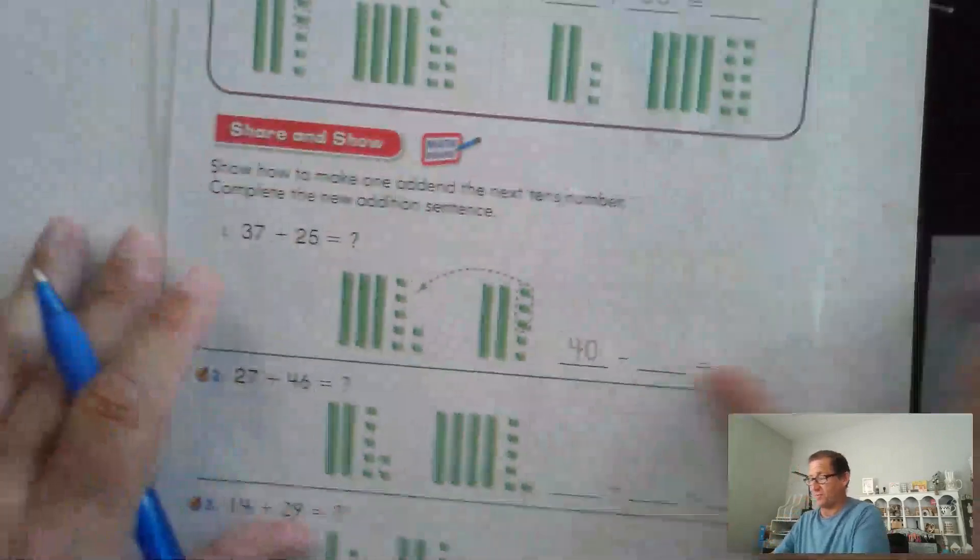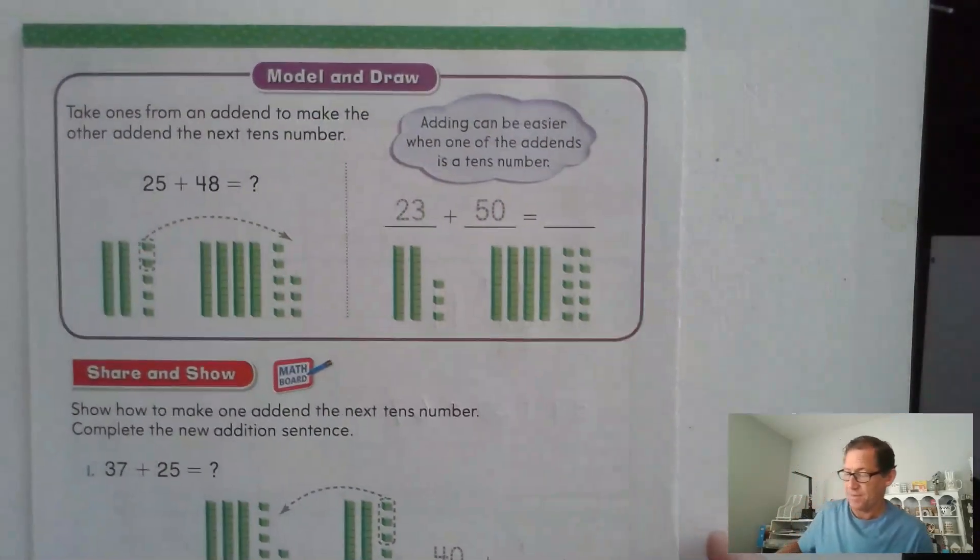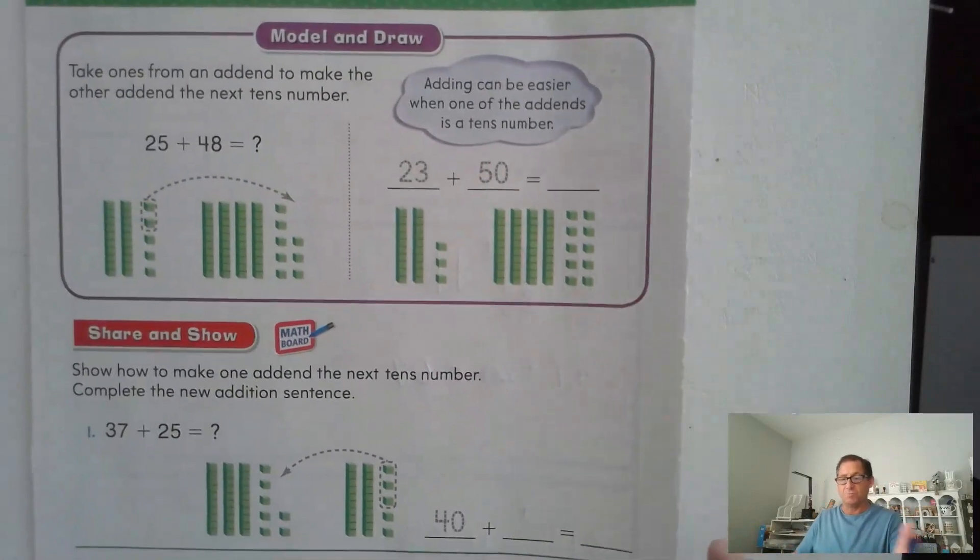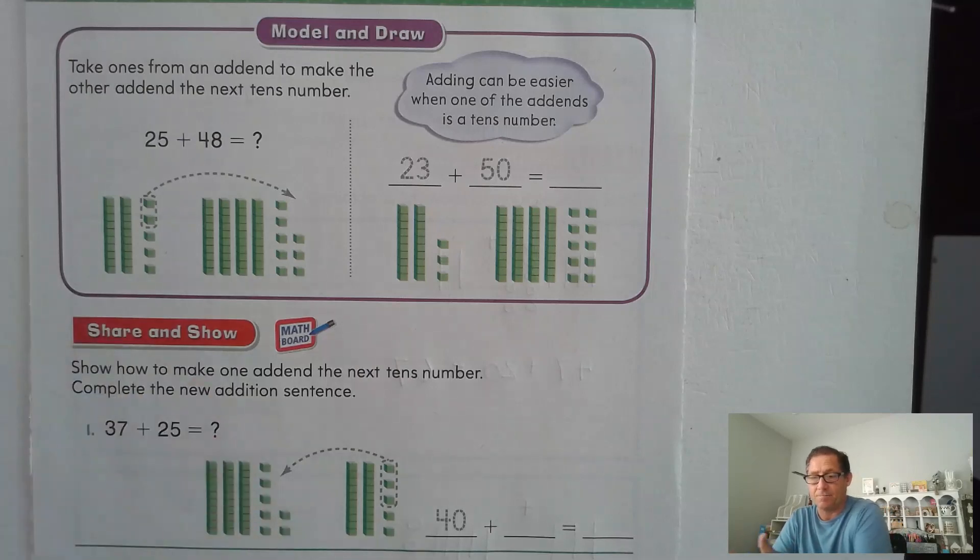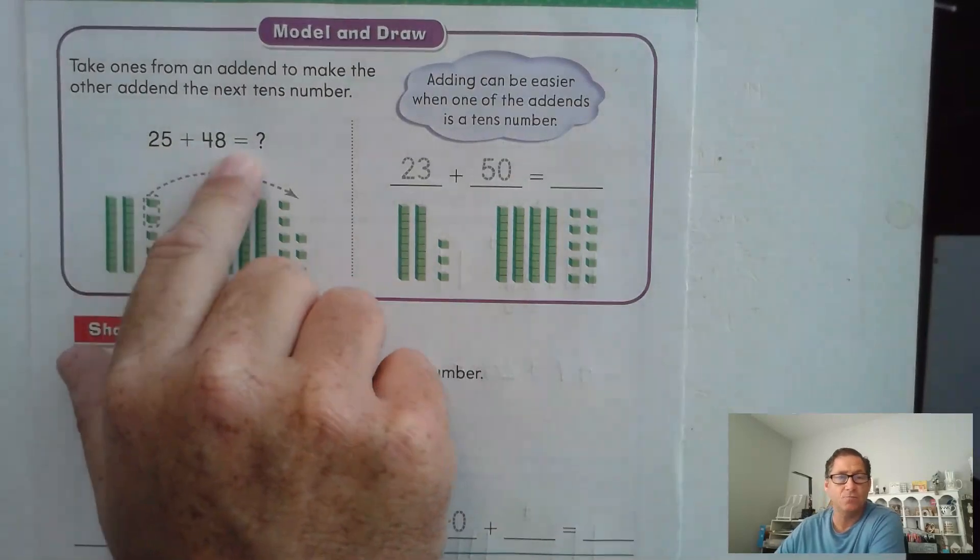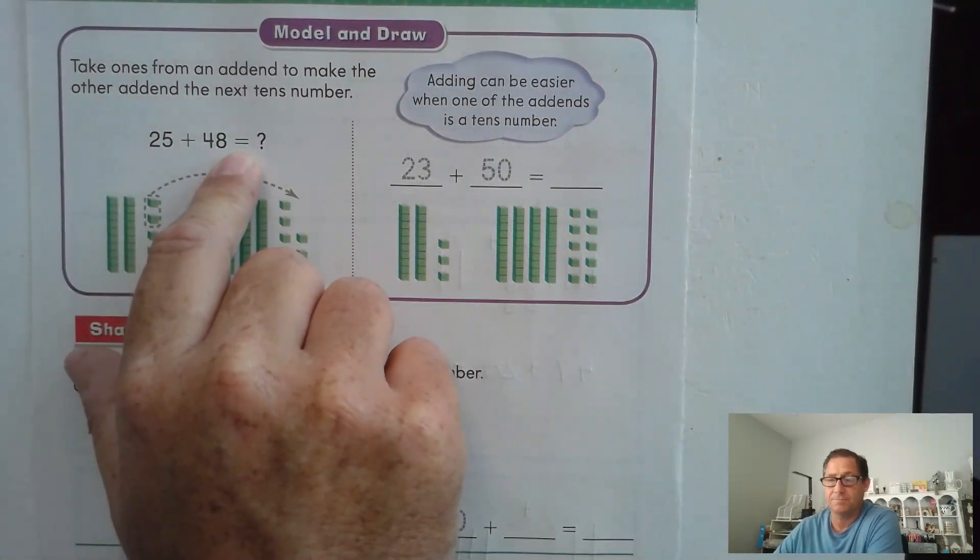Alright. Well, let's look at page 178. So that's the two problems we practice. They already had a 10, right? And so we just counted the 10s that they gave us. But what if we have two addends that aren't a 10?